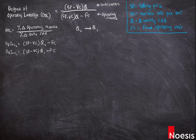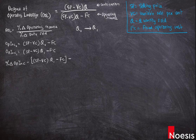Now we're going to measure the percentage change in operating income. The percentage change in operating income equals the difference between the two operating incomes: operating income at Q₁ units minus operating income at Q₀ units.